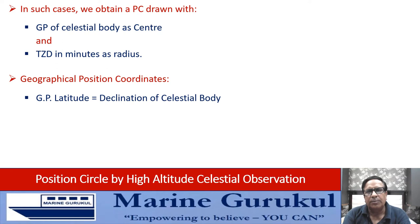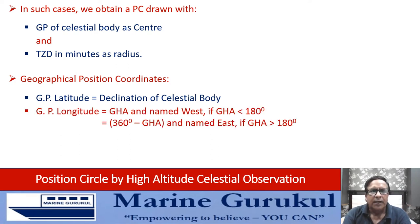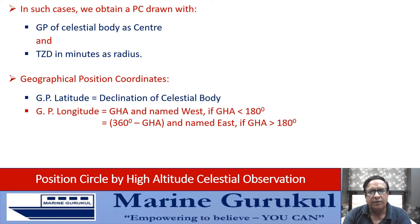The latitude of the geographical position is the same as the declination of the celestial body, both in magnitude and name — north or south. As far as the longitude of the GP is concerned, it depends on GHA. If the GHA of the body is less than 180°, then the longitude of the GP is equal to the GHA and named west. However, if the GHA is greater than 180°, then the longitude of the GP equals 360° minus GHA, and is named east. Please remember this if you wish to use this method.